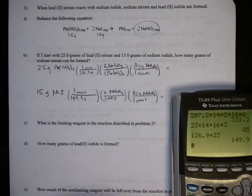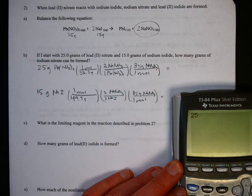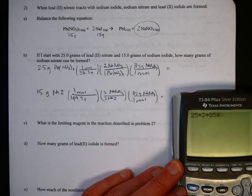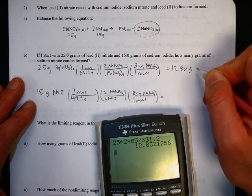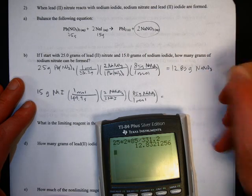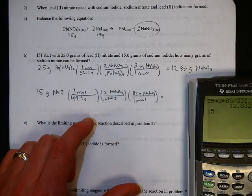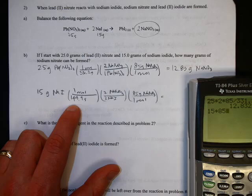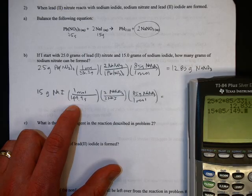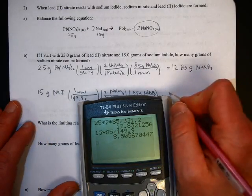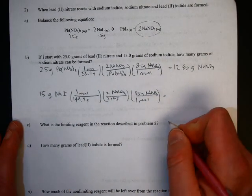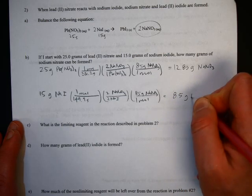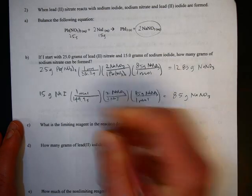So small number is the right answer. So let's see. This one's 25 times 2 times 85 divided by 331.2. And you get 12.83. And for this one, 15 times 85 divided by 149.9. And I got 8.5.